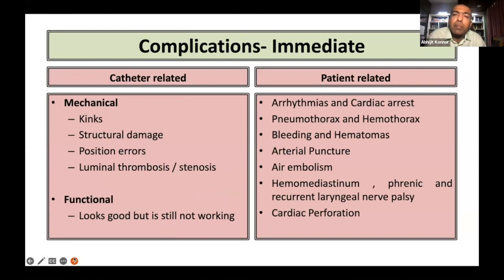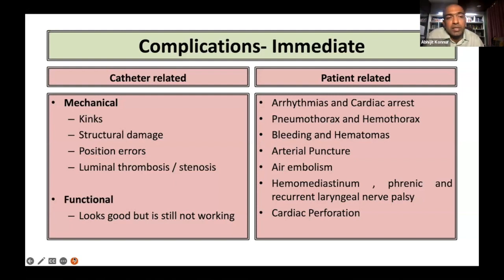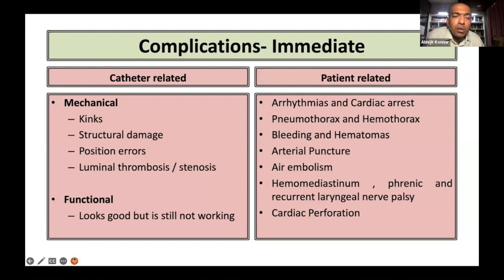Coming to the important topic of complications related to catheters: complications can be divided into immediate and late, and they may typically be because of catheters or related to the patient. Amongst the catheter-related complications, it can be due to mechanical causes or functional causes. Mechanical causes are typically because of kinks, structural damage to the catheters, any position errors at the emplacement of the tip or the curvature that the catheter needs to attain, luminal thrombosis, or presence of stenosis.